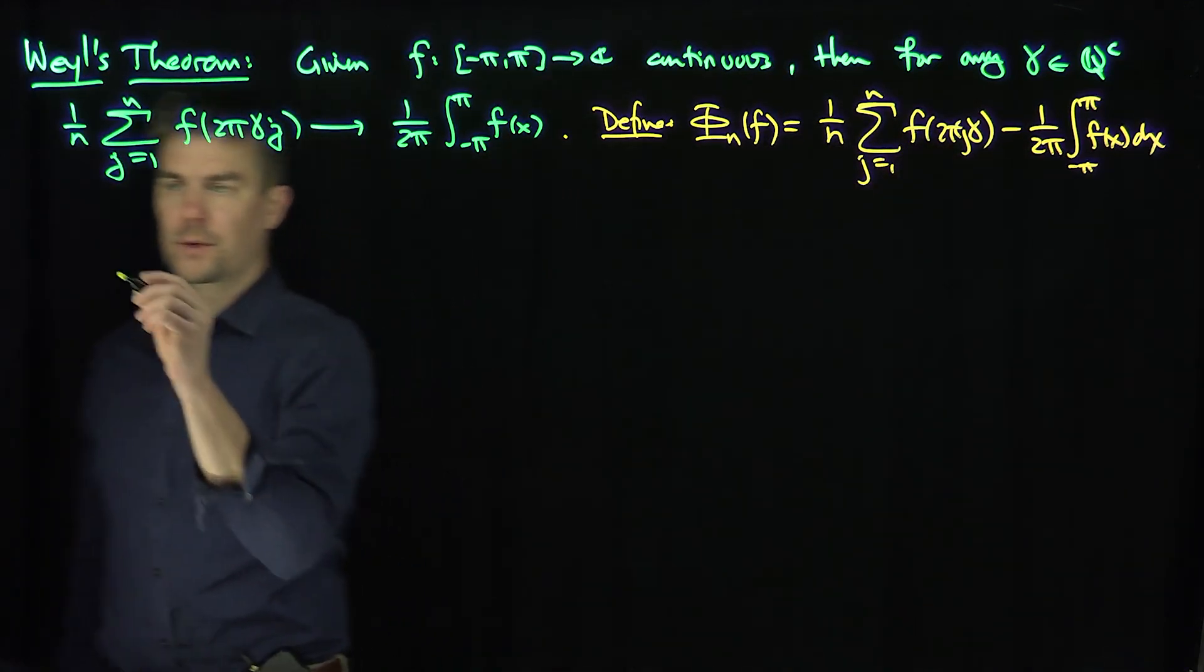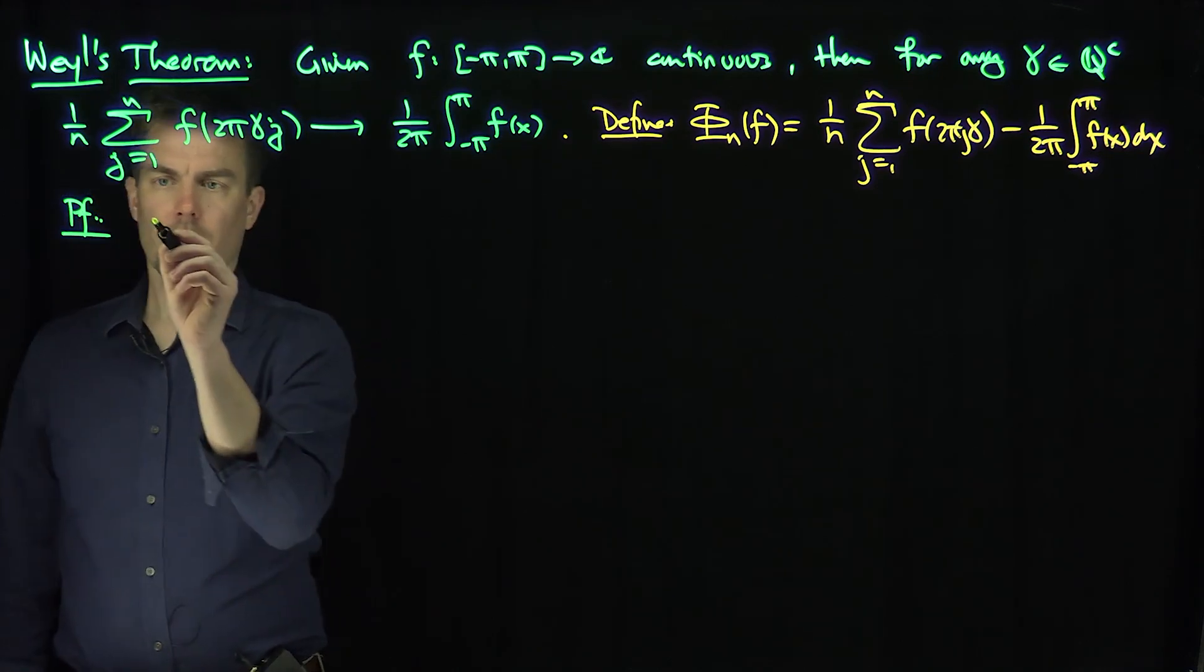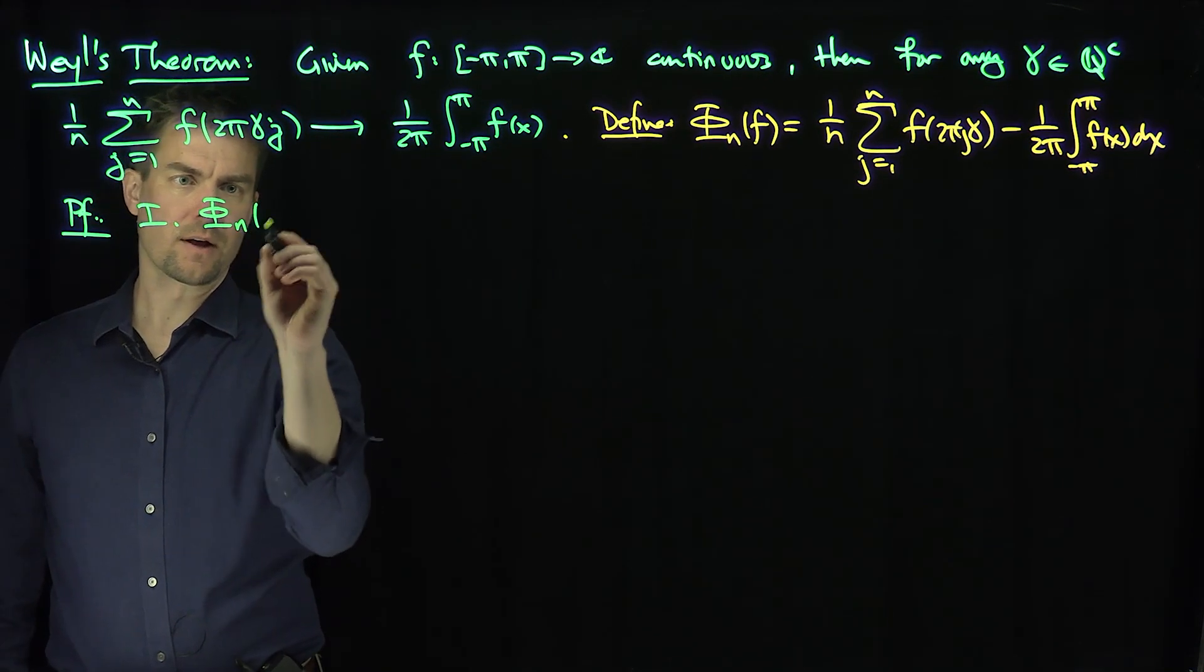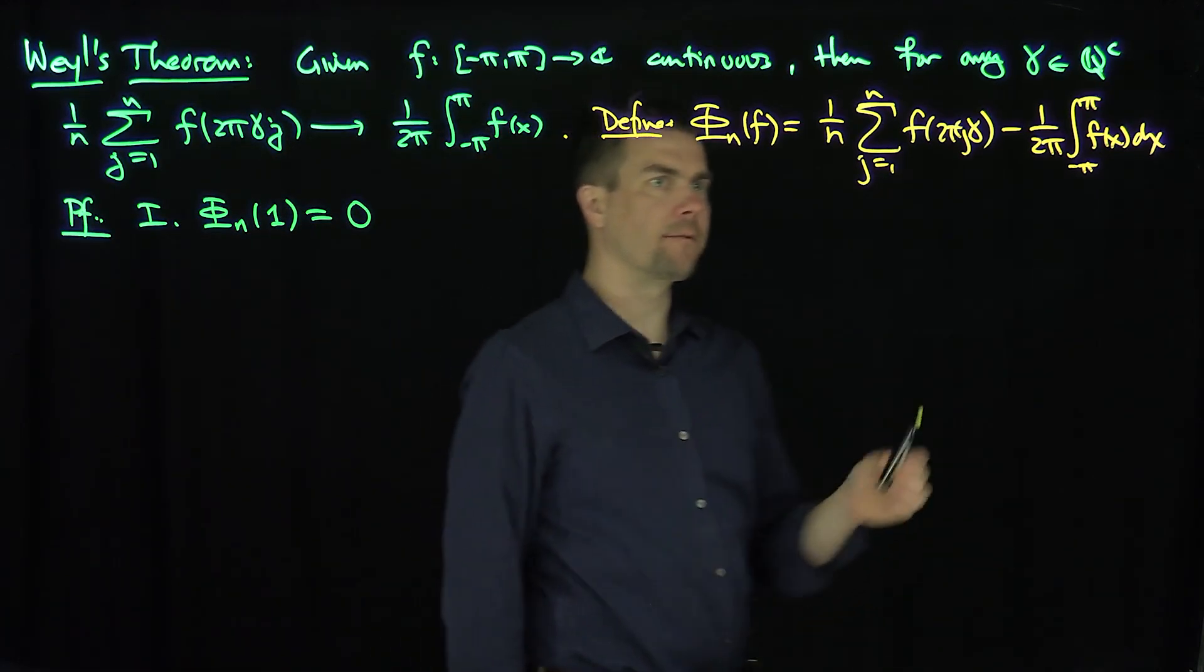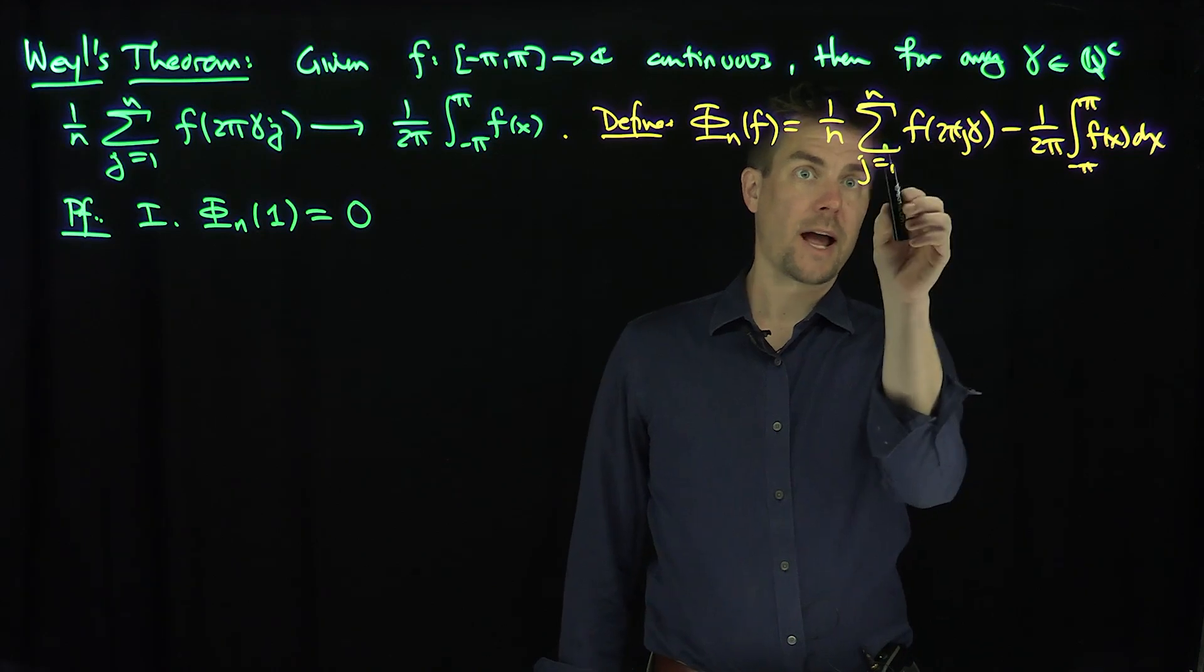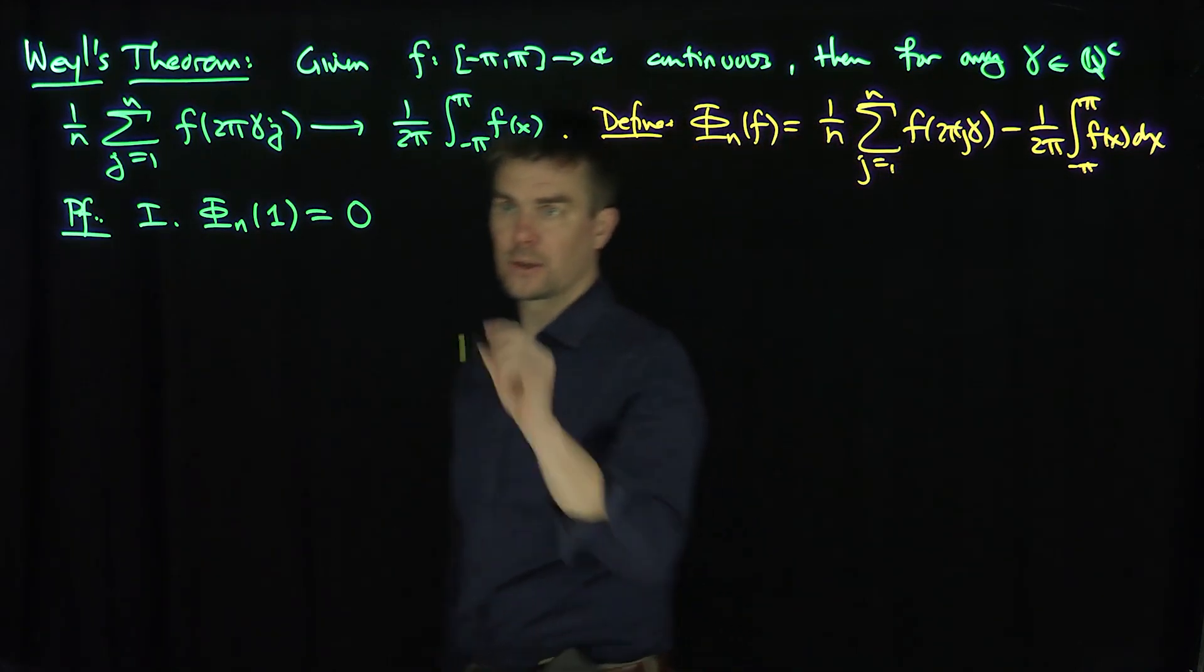So I'm going to break this into several phases. Proof. So note, first part is note that φ_n of 1 is equal to 0. That's easy to see, because if f is a constant, then this is just going to be n over n, which is 1, and then this is going to integrate just to 1, so φ_n of 1 is 0. So that's easy to see.